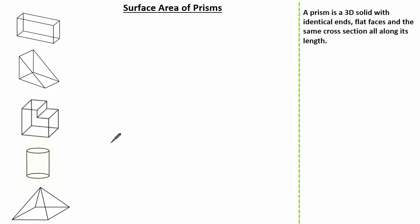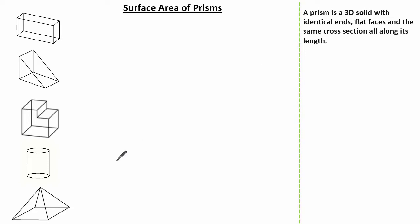But what about a cylinder? You can see that we have the same cross-sectional area as we go through, but this is not a prism. The reason why it's not a prism is because it doesn't fit the definition — it must have flat faces. A cylinder has a curved face all the way around, so therefore, although it has the same cross-sectional area throughout, it's not classed as a prism.